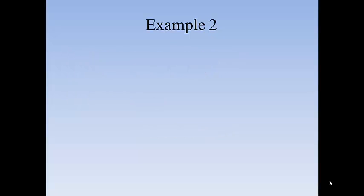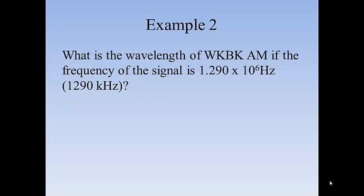Example 2 is going to be your turn. WKBK AM broadcasts at a frequency of 1290 kilohertz or 1.290 times 10 to the 6 hertz. What's the wavelength of the radio signal? Go.